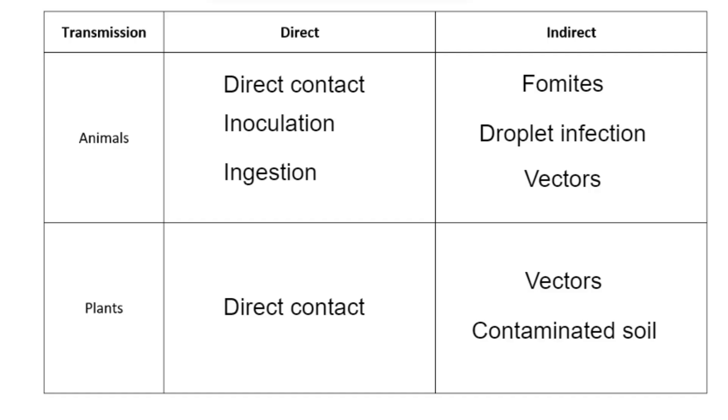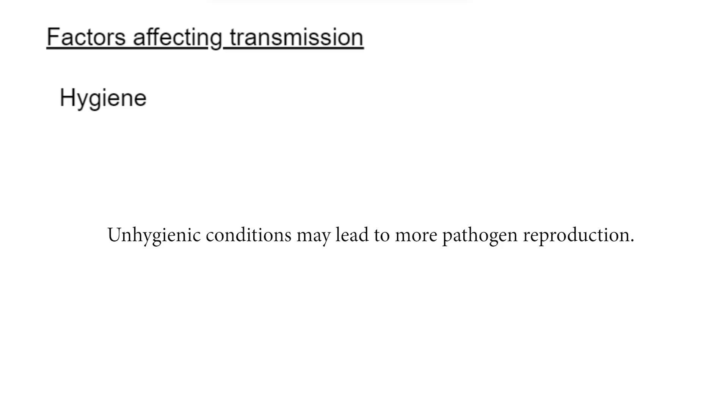Now that we've talked about the different methods of transmission, there are several ways the transmission rate can be affected. The first is hygienic conditions — this could relate to personal hygiene or the hygiene of the environment. Living in an unclean or unhygienic area would result in a higher chance of getting infected. Having a naturally weak immune system is also a problem, as the body is less able to fight off infections, increasing the chance of disease transmission.